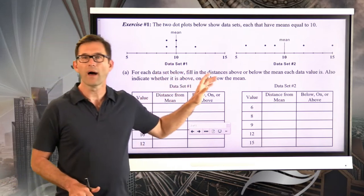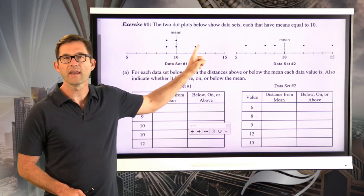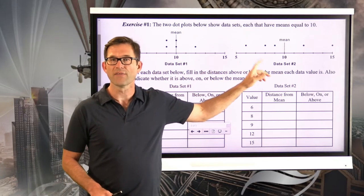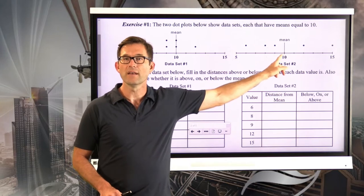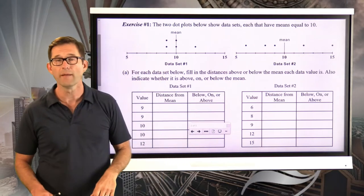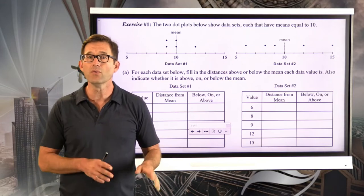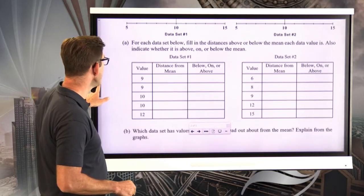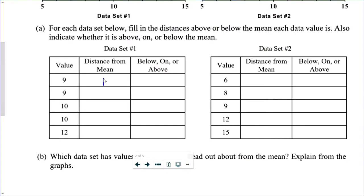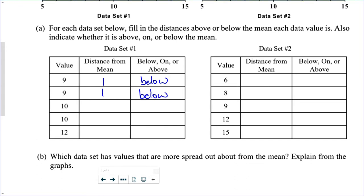We've got this one dot plot with values of 9, 9, 10, 10, and 12. The data value of 9 is one unit from the mean and it is below the mean. The other 9 is also one unit below the mean. A data value of 10 is 0 units — that's on the mean. Again, 0 units on the mean. And the 12 is 2 units above the mean.